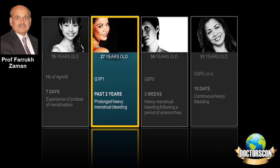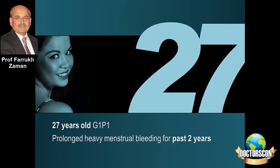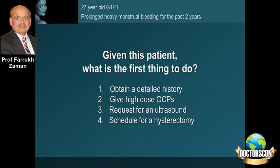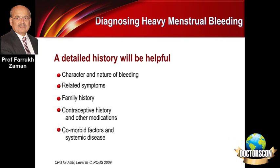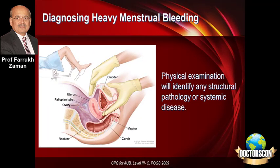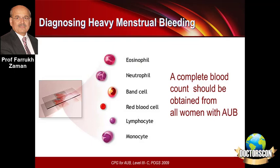Consider a 27-year-old woman, gravida 1 para 1, presenting with prolonged heavy menstrual bleeding for the last two years. What would you do? The options are: obtain a detailed history, start oral contraceptive pills, request an ultrasound, or schedule a hysterectomy. Obviously at this young age, hysterectomy is out. Ultrasound, possibly yes. High-dose OCPs only after diagnosis. But obviously, a detailed history is important, covering the nature of bleeding, related symptoms, and family history. Physical examination is also essential — we must not deviate from proper history and examination despite the easy availability of ultrasound, because many causes are identified at this stage, and investigations complete the picture.